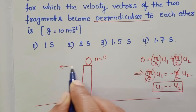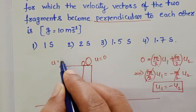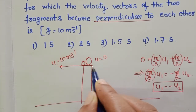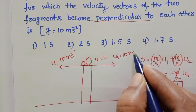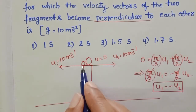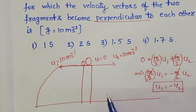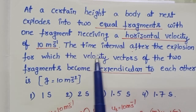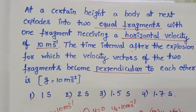The first fragment moves along one direction with initial velocity 10 meters per second. At the same time, the second fragment moves with the same speed but in the opposite direction. We know the path followed by a horizontal projectile is a parabola. We need to find the time interval after the explosion for which the velocity vectors of the two fragments become perpendicular to each other.